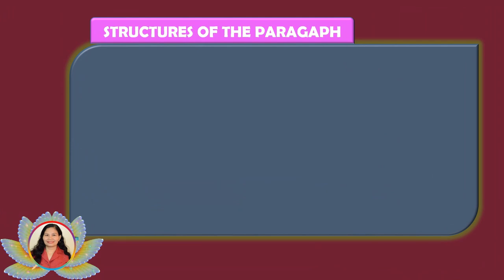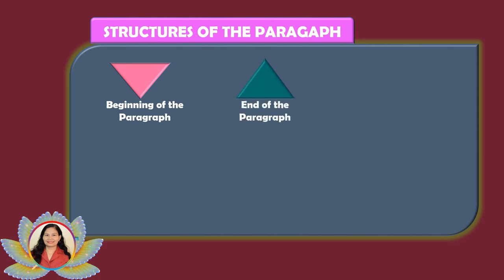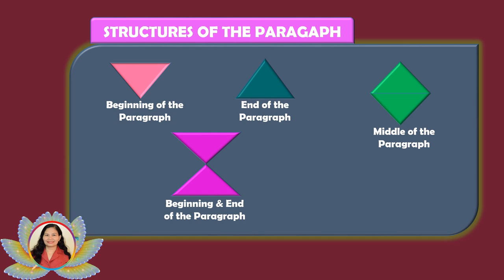There are five structures of the paragraph. First, inverted pyramid — the topic sentence is at the beginning. Second, pyramid — the topic sentence is at the end. Third, diamond — the topic sentence is in the middle. Fourth, hourglass — the topic sentence is at both the beginning and end. Lastly, rectangle — the topic sentence is implied and not stated in the paragraph; the reader must figure out the topic sentence based on the supporting details.